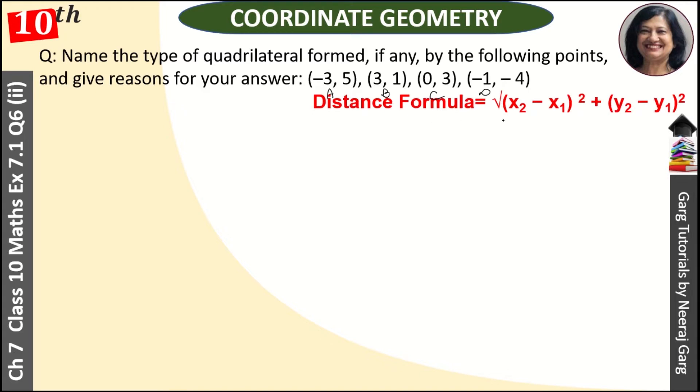So what is the distance formula? That is (x₂ - x₁) whole square plus (y₂ - y₁) whole square, under root. The whole thing comes under root.